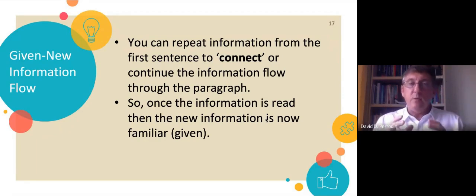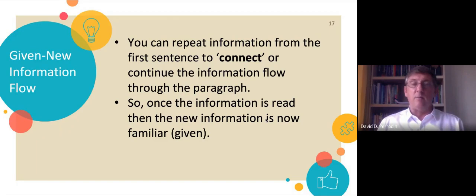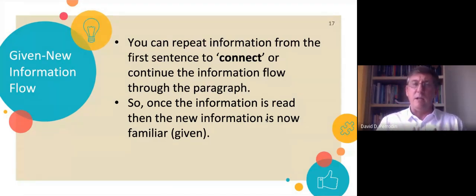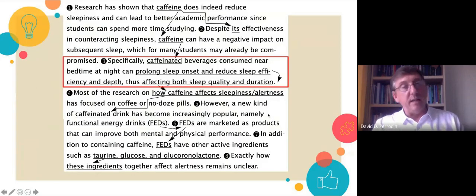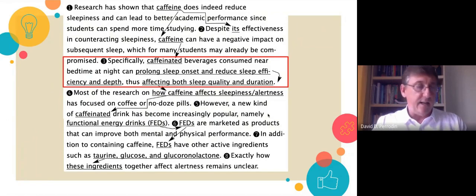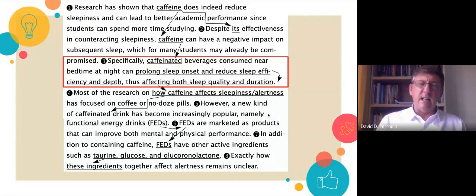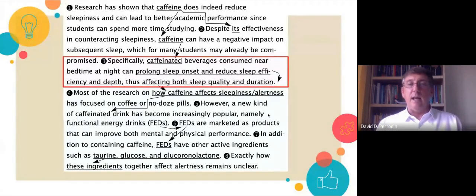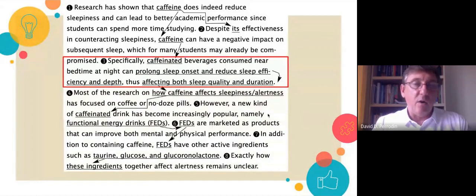Whenever we do research, that research is important to us. Every time I write an academic article, it becomes my investment, and I want to make sure I communicate that investment of time and energy to the reader. The better the information flow, the easier that information is communicated. Sentence three discusses caffeinated drinks and also discusses prolonged sleep onset, reduced sleep efficacy and depth — tying again to the topic of sleep, and affecting both sleep quality and duration. We know caffeine reduces sleepiness, and we see throughout the text how the author is connecting sleepiness, alertness, and caffeine.